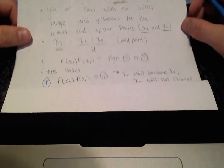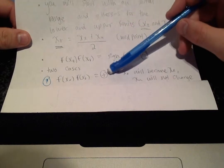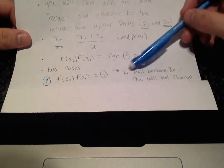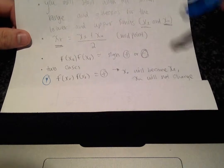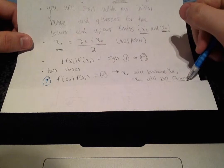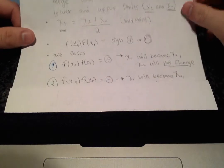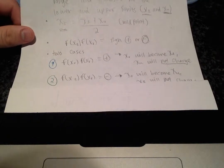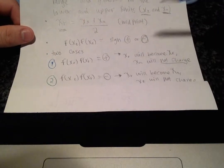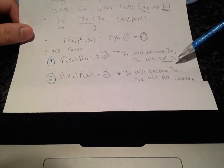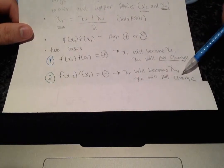So, for the two cases, the first case, it could be positive. And if it is positive, then your xr value will become the lower limit. And your upper limit will remain unchanged. And the second case, if the product is negative, then xr will be set to the upper limit. And the lower limit will remain unchanged.